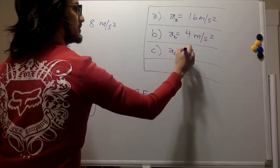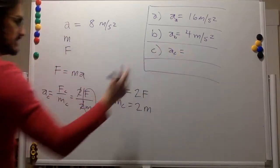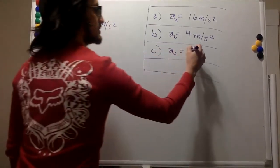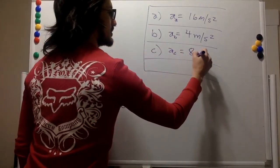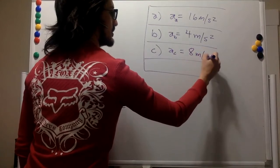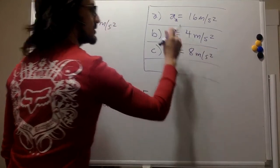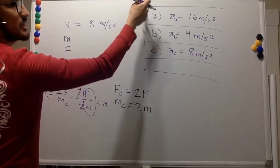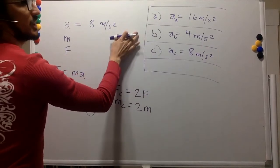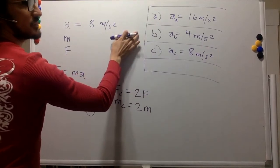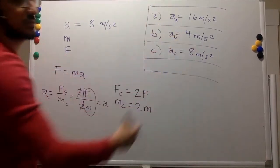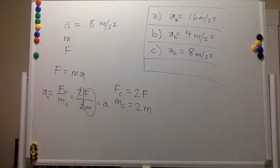The 2s cancel out, and force divided by mass is the original acceleration. So the acceleration of part C is the same as the original — 8 meters per second squared. You doubled the force, which would have doubled the acceleration, and doubled the mass, which halved it, so the result is that the acceleration didn't change.